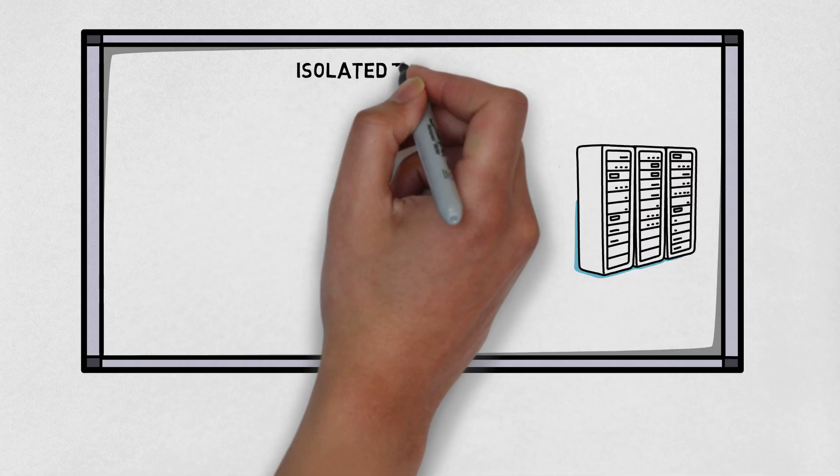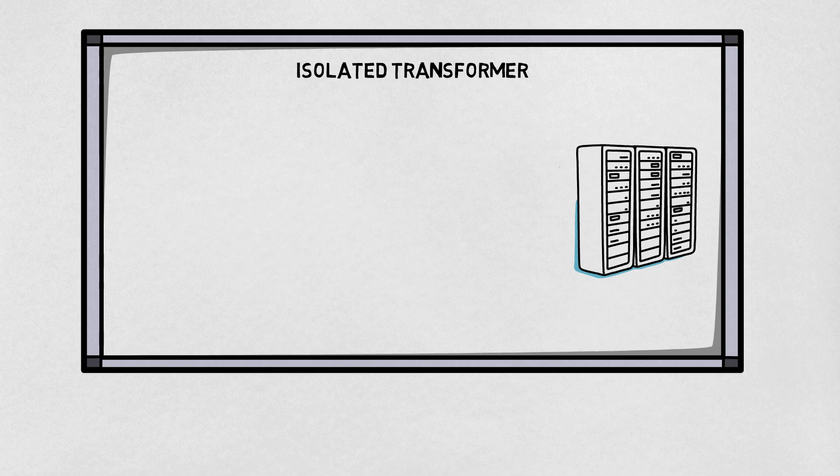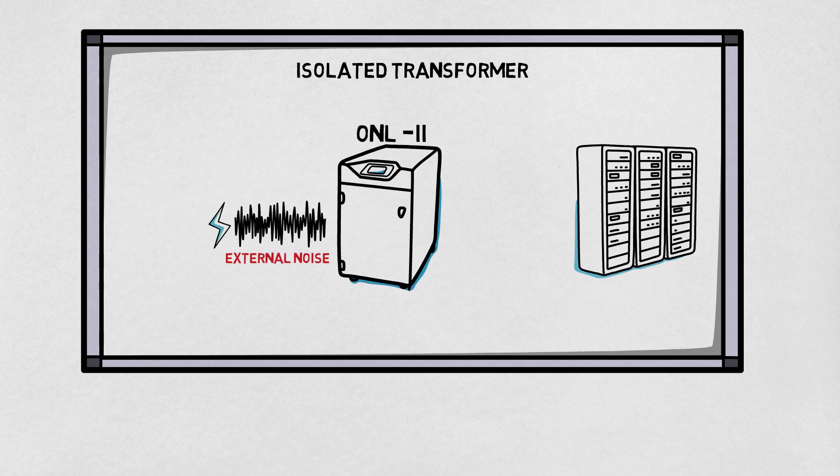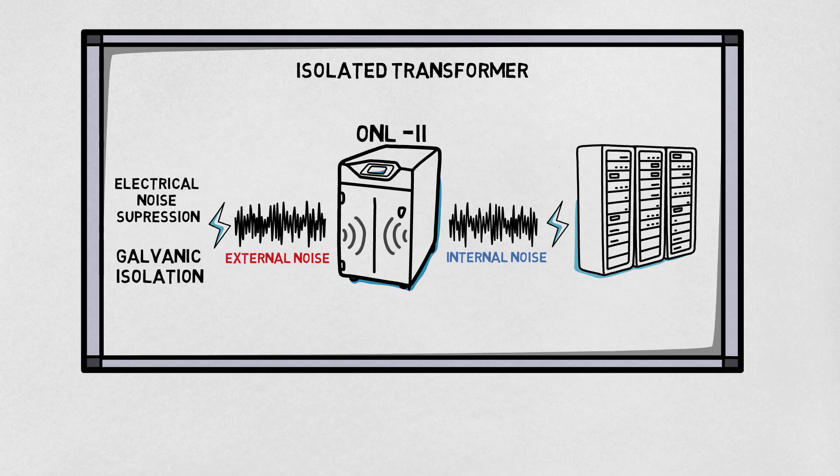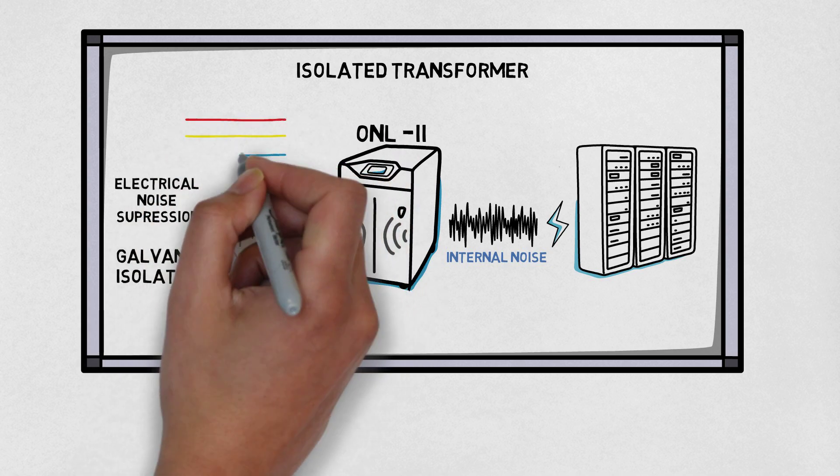Lastly, isolated transformer. Some industrial environments have heavy electrical noise. Therefore, certain 3-phase UPS has built-in isolated transformers to suppress electrical noise, forming what is called galvanic isolation, where voltage has no direct contact.